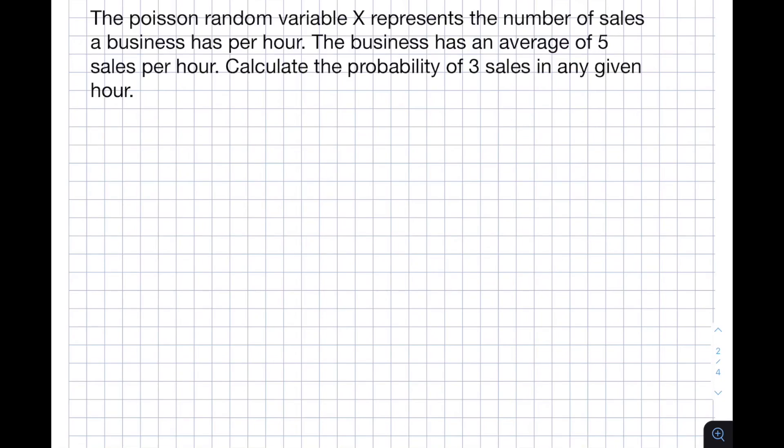Hello everyone, welcome to Explorer Hop. In this problem, we're told the Poisson random variable X represents the number of sales a business has. The business has an average of 5 sales per hour. We need to calculate the probability of 3 sales in any given hour.